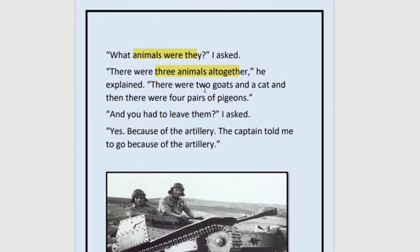What were the animals? There were two goats, a cat, and four pairs of pigeons. So there were three types of animals: goats, a cat, and four pairs of pigeons. And you had to leave them — so you had to leave your animals and come.